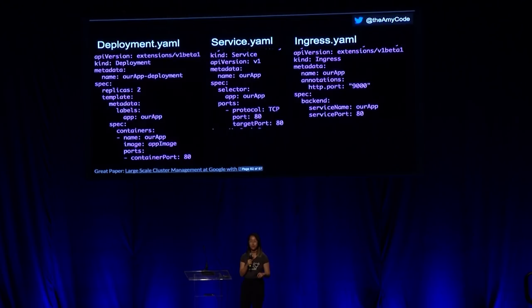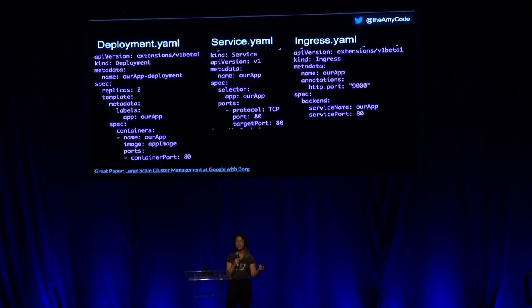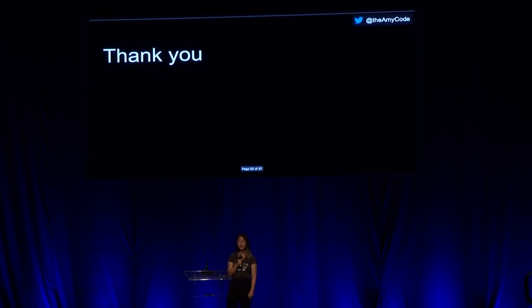Now we have a bunch of YAML files that basically represent everything shown before — we have a deployment, a service, and an ingress controller. I hope you have a good foundational basis for what Kubernetes is. Once again, it's just basically a way to organize all of your baby computers together. Thank you so much for your time and allowing me to tell you about Kubernetes within five minutes.